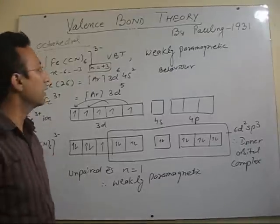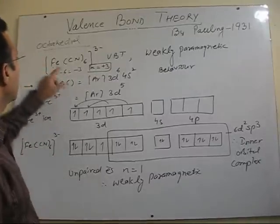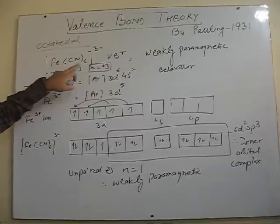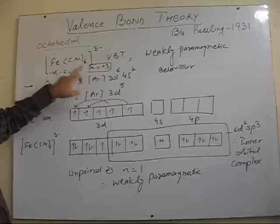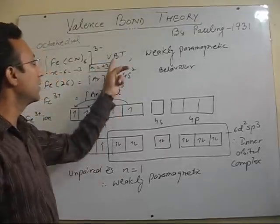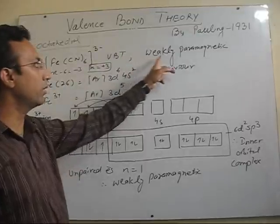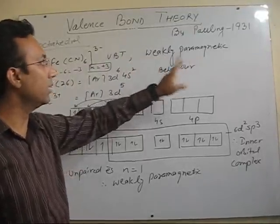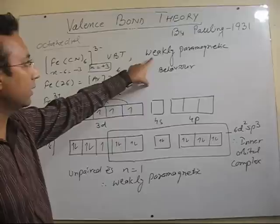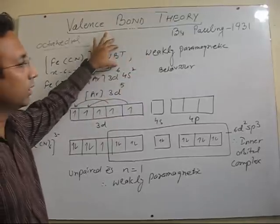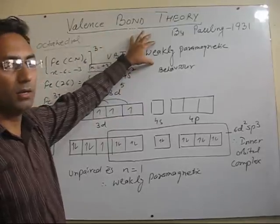Let's take another example in the octahedral complex. We have one complex of iron with coordination number 6. Cyanide is the ligand in this case. In exams, the question usually comes like this: using valence bond theory, how will you explain the weakly paramagnetic behavior of this complex? To explain any complex using VBT, its magnetic behavior should be known.